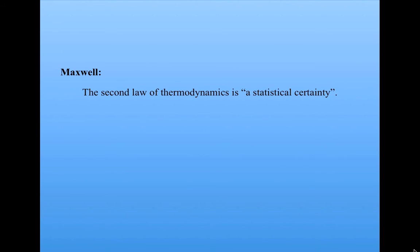Maxwell's own view on the second law was that it was not a law at all, but rather what he called a statistical certainty — one that holds for large collections of molecules, not individual molecules themselves. That is, it's possible in principle that entropy could decrease on its own, thus violating the second law. But in practice, this is never seen, because it is statistically so much more likely for entropy to increase.